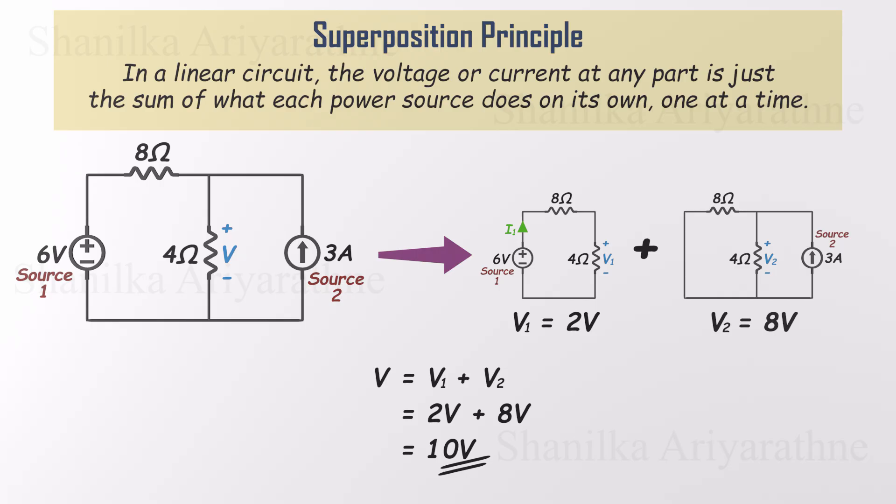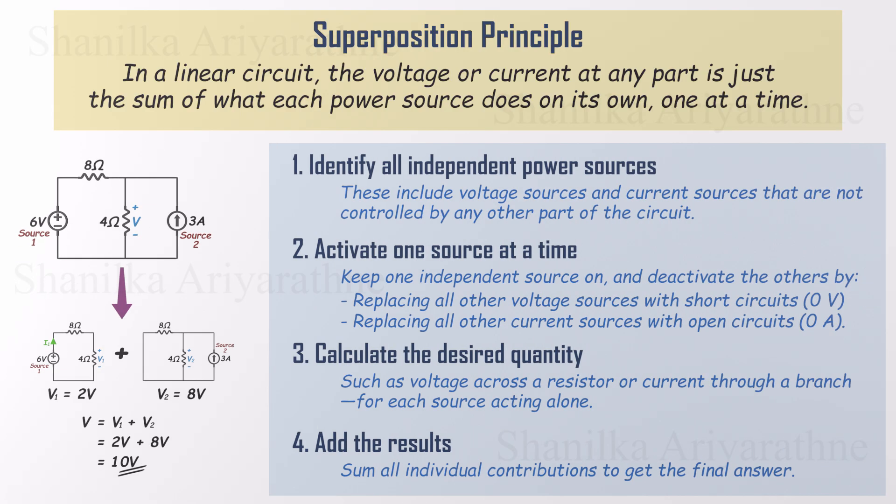Still curious? You can always double check the result using Kirchhoff's laws. It'll give you the same answer. Let's quickly go over the steps for using the superposition theorem. Step 1. Identify all the independent power sources. These are voltage or current sources not controlled by anything else in the circuit. Step 2. Activate one source at a time and deactivate the others. Replace voltage sources with short circuit 0 volts. Replace current sources with open circuits 0 amps. Step 3. Calculate how the active source affects the part of the circuit you're interested in. Step 4. Add up all the individual results to get the final answer.